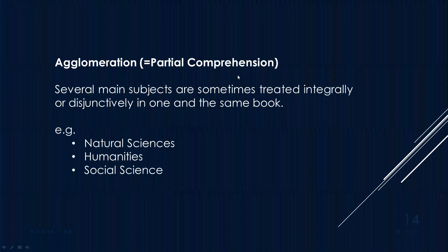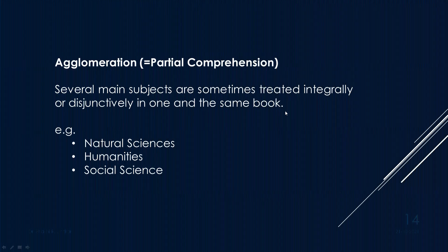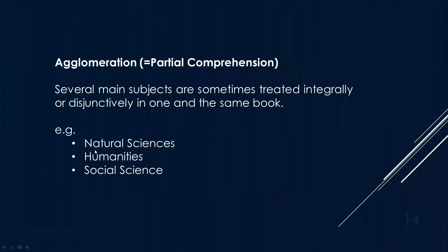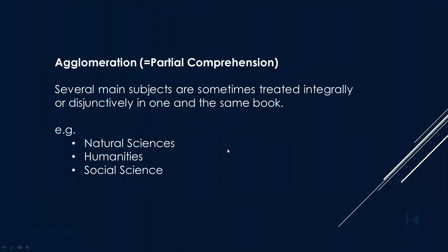Agglomeration — previously called 'partial comprehension' by Dr. S. Ranganathan — refers to cases where several main subjects are sometimes treated integrally or disjunctively in one and the same book. For example, natural sciences, humanities, and social sciences together. Natural sciences is a combination of various subjects, and that is called agglomeration.